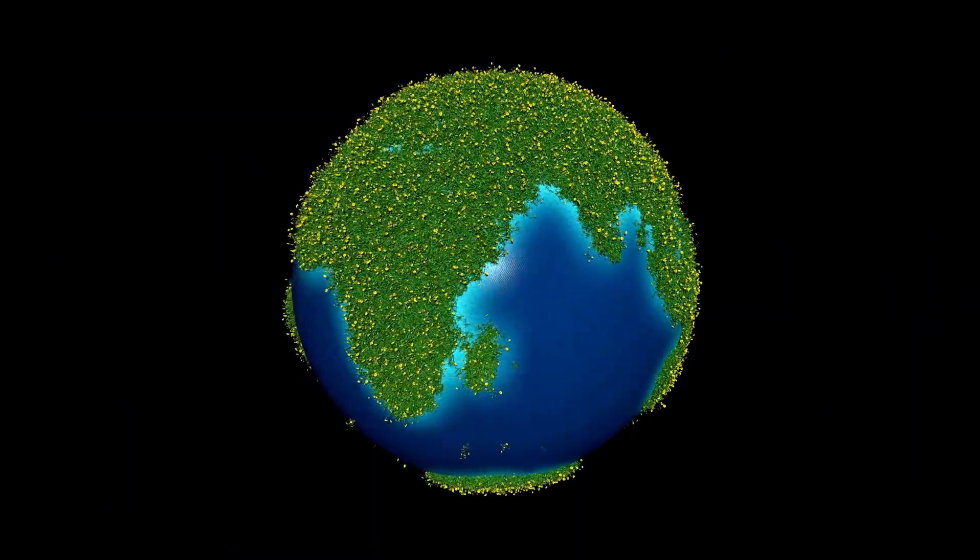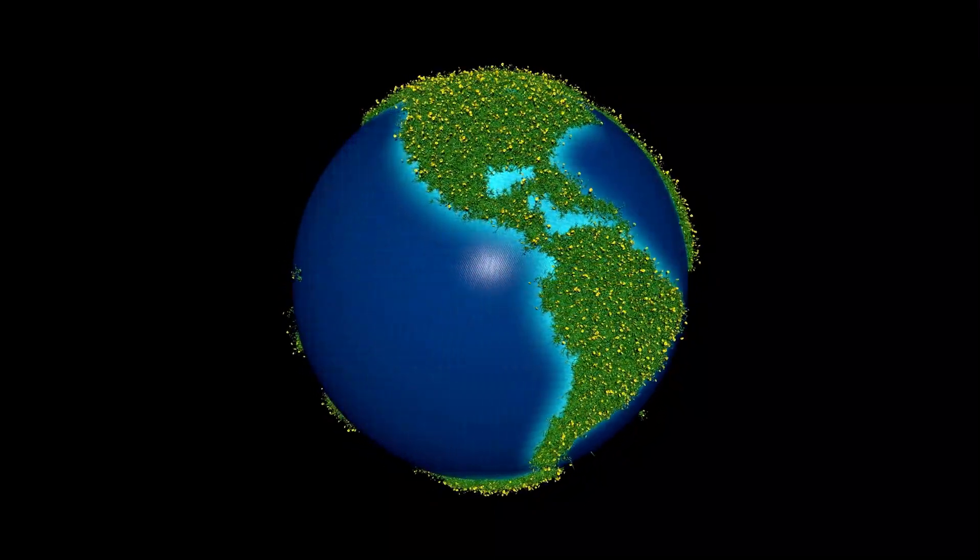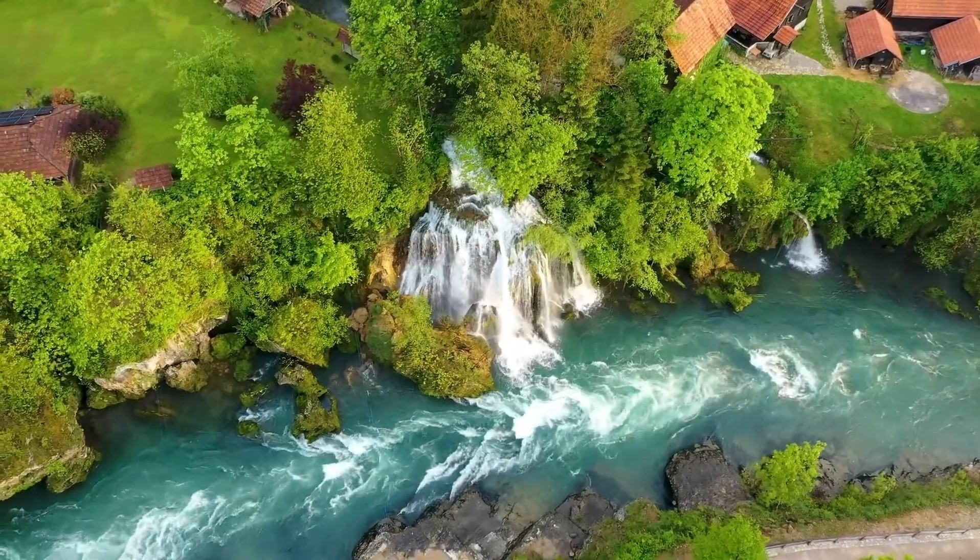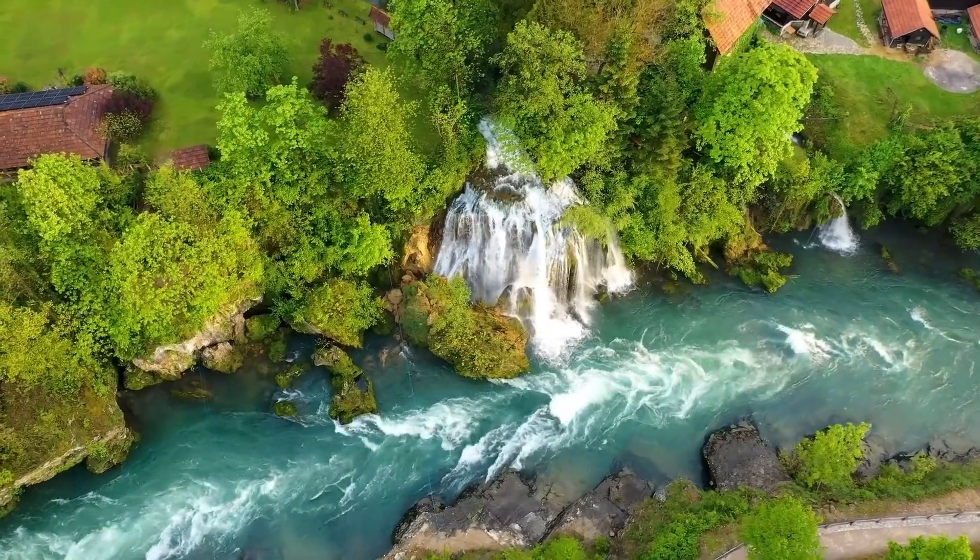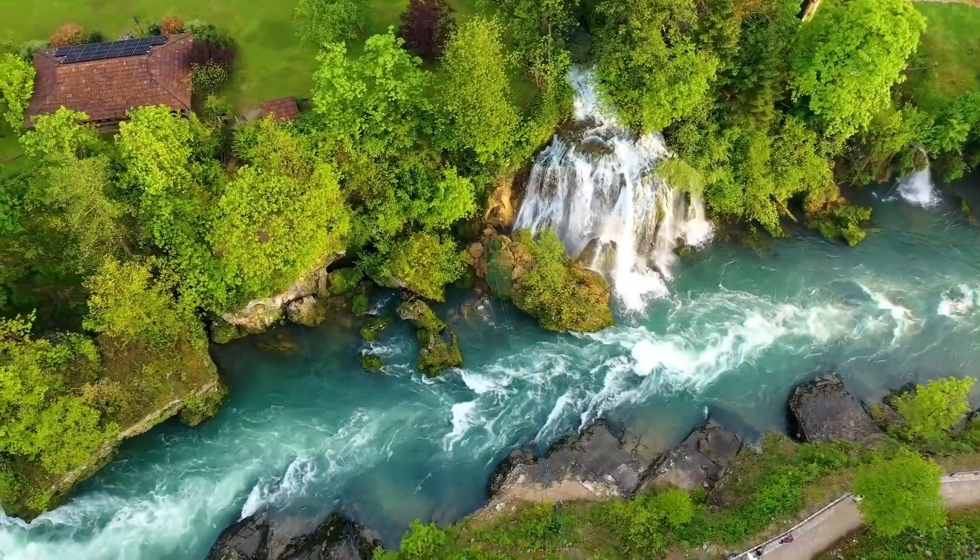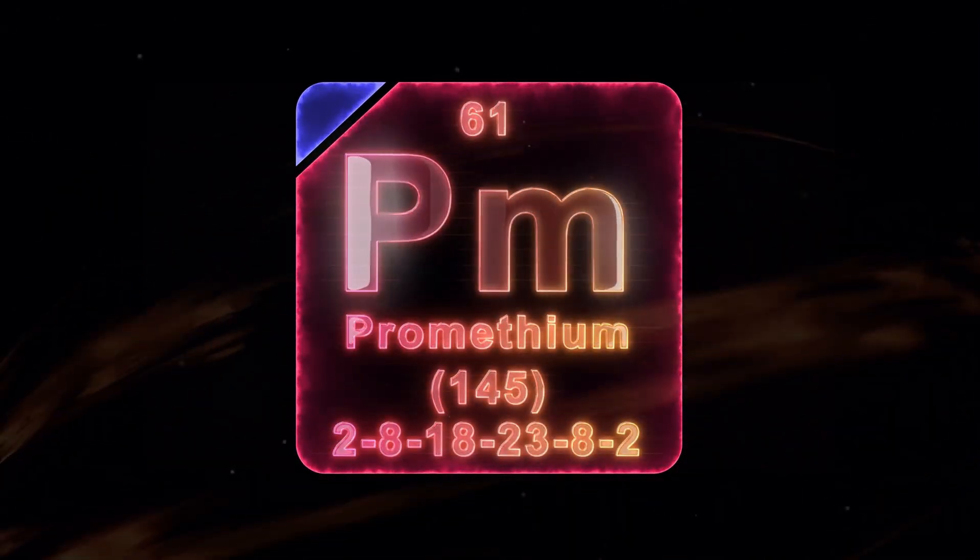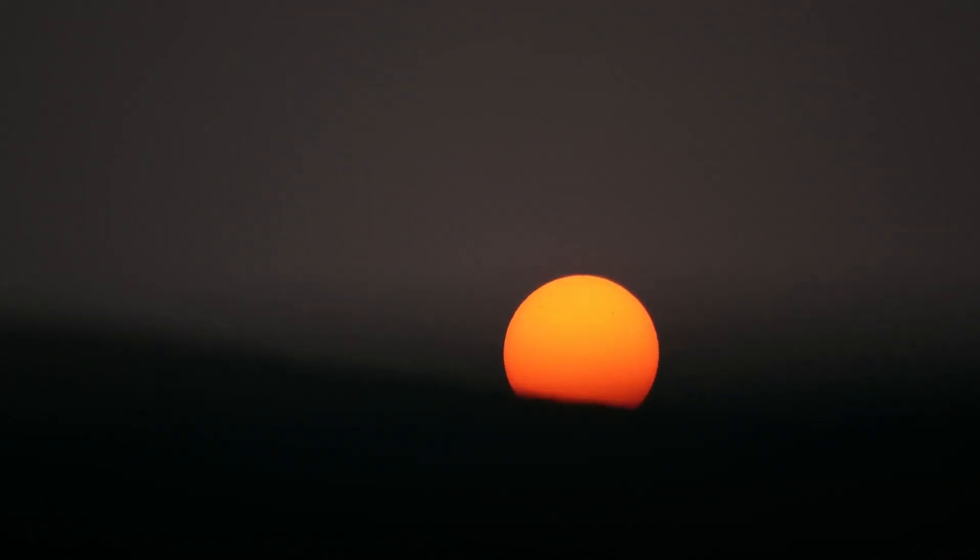But before we start dreaming about vacationing on Proxima b, let's consider some of the peculiarities. For starters, a single day on this intriguing exoplanet lasts a staggering 11 Earth days. Imagine sunrises that not only herald a new day but unfold slowly, resisting giving way to midday, and sunsets that stretch out too long, creating golden hours that photographers dream about. While it sounds idyllic, it also has significant implications for its climate and habitability.